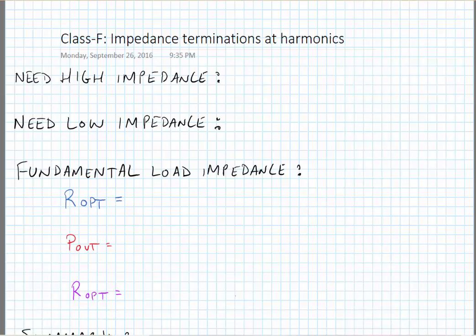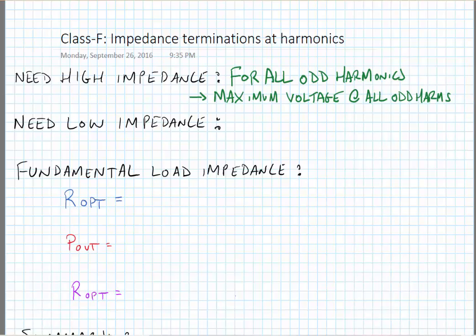We're going to have different terminations for even harmonics and odd harmonics. We need a high impedance for the odd harmonics because we want maximum voltage gain of the transistor at all these odd harmonics. The opposite is true: we need a low impedance for all even harmonics because we want maximum current at all of the even harmonics.